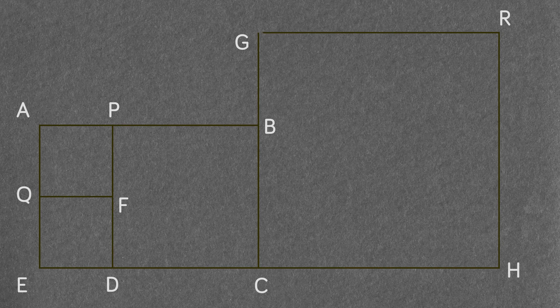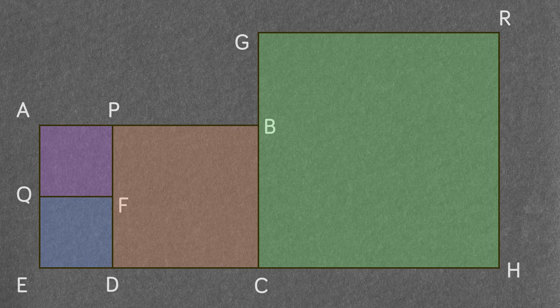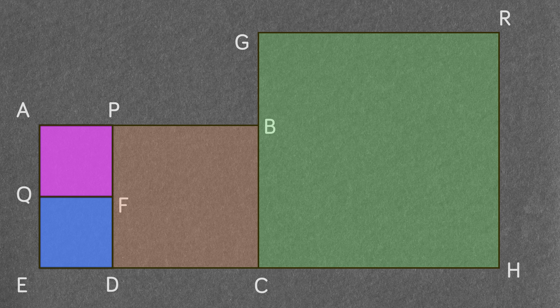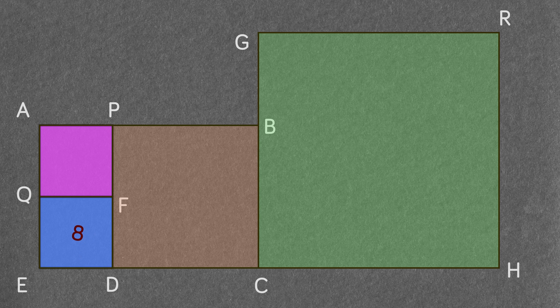Hi, we have 4 squares placed together like shown. The 2 small squares on the left are identical to each other and are 8 square units in area.